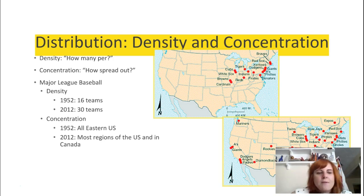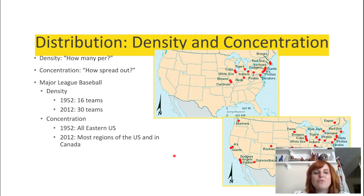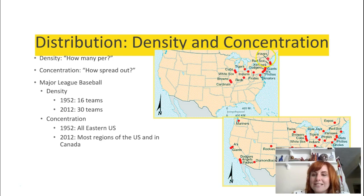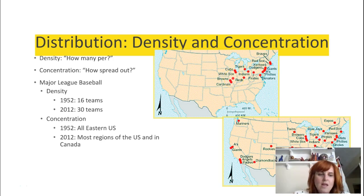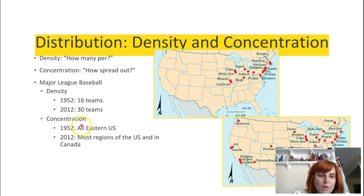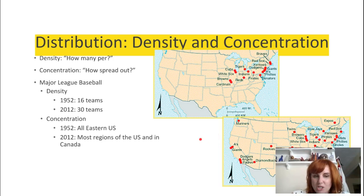Here's a couple more examples. We have Major League Baseball teams in 1952 and 2012. In 1952, teams were densely concentrated within the East Coast and a little bit of the north midwest. Then by 2012, they become a little more sparsely located — not so close together, less dense. Before, we could say they were concentrated in the northeast, but now since they're sparsely spread all over the United States, we can say they're not very concentrated. They're sparse.